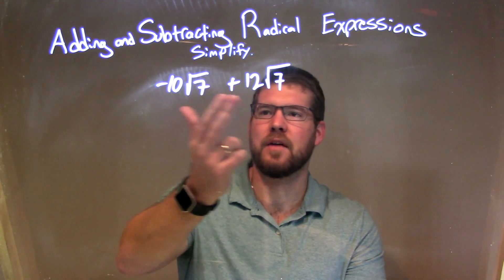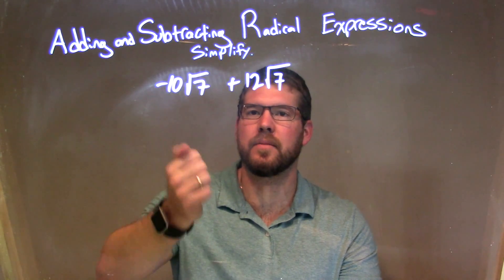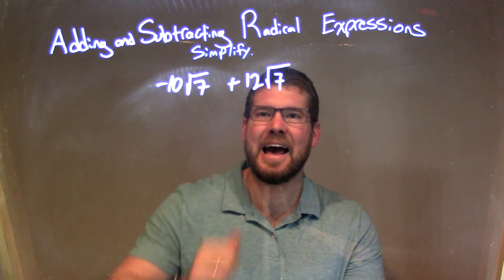since they both have the square root of 7 right there, and the number in front that's multiplying by that square root of 7, we can look at the numbers up front and add them.